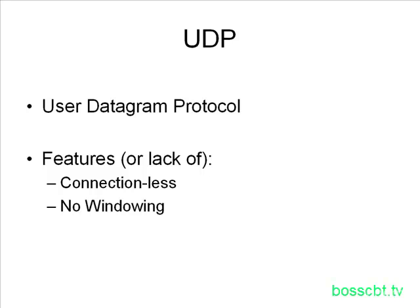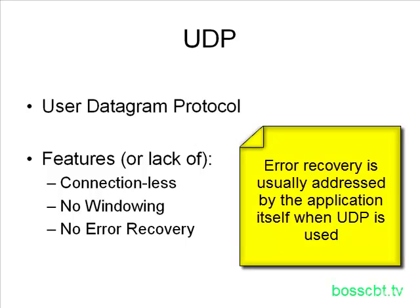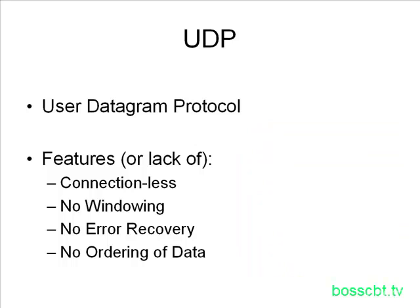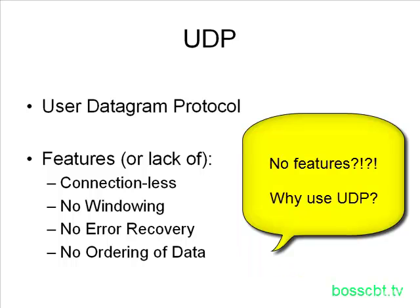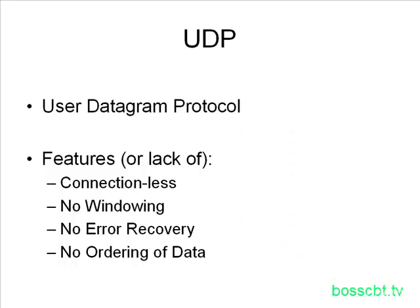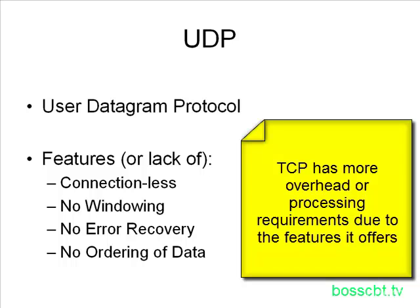UDP does not offer any sort of windowing or flow control like TCP does. UDP does not offer any sort of error recovery like TCP does. And UDP does not care about the ordering of data, whereas TCP does. Because of all the features that TCP has compared to UDP, there's a lot more processing involved on the TCP side. That means there's less overhead on the UDP side — it's a lighter protocol.